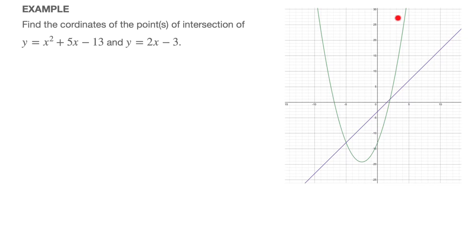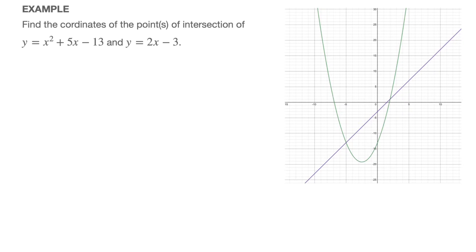I've already plotted the parabola as well as the line on the right-hand side of the screen, and we can see right away that they intersect in two points. If we were allowed to use graphical calculators, we'd be able to find the answer simply by finding the x and y coordinates of both points of intersection. But here, we learn how to do that algebraically, or simply by hand.